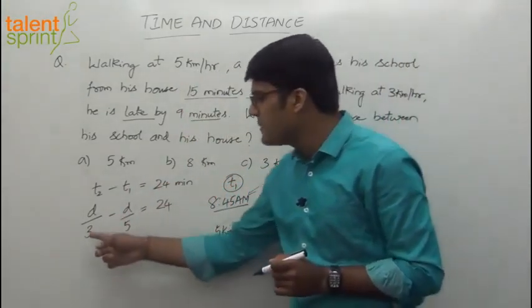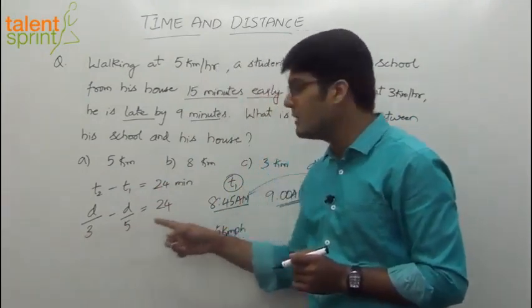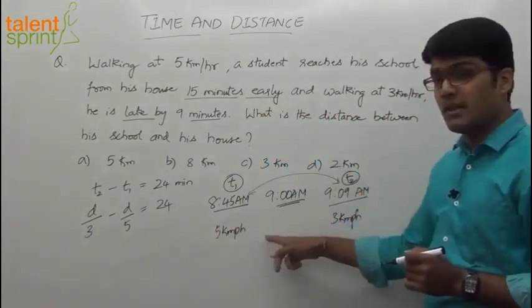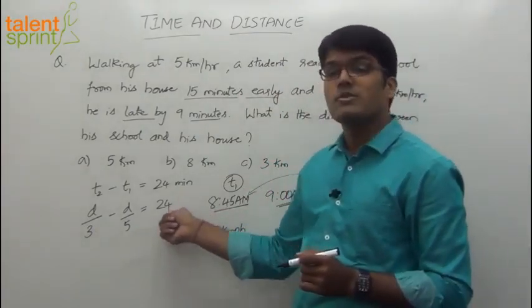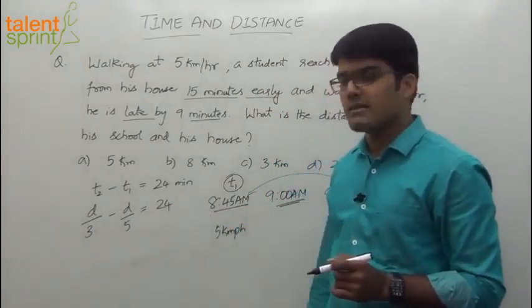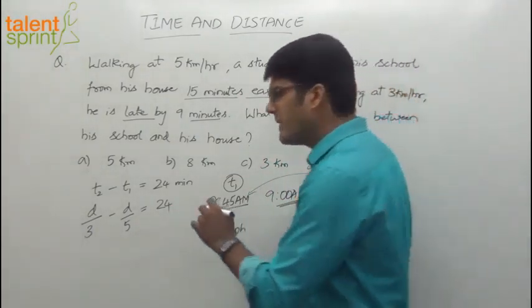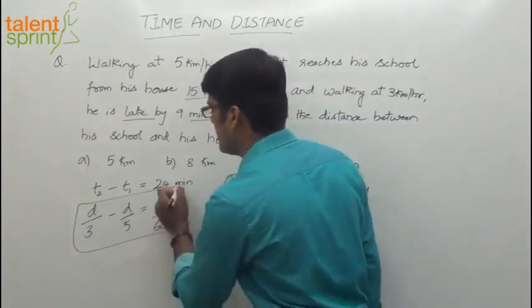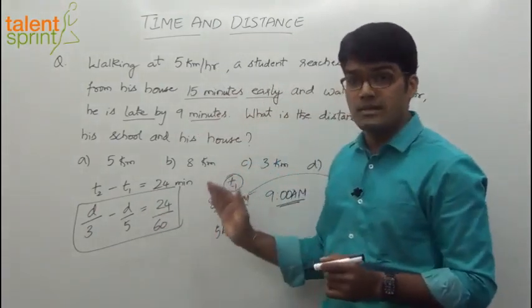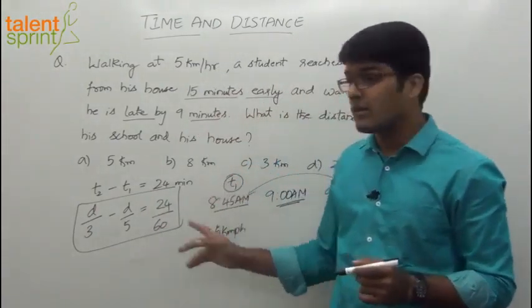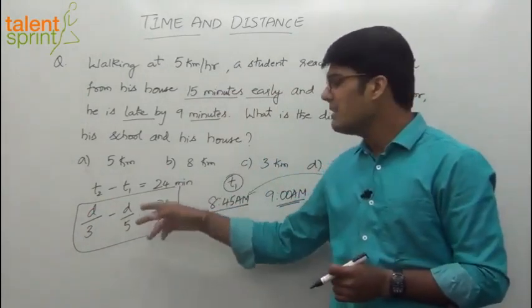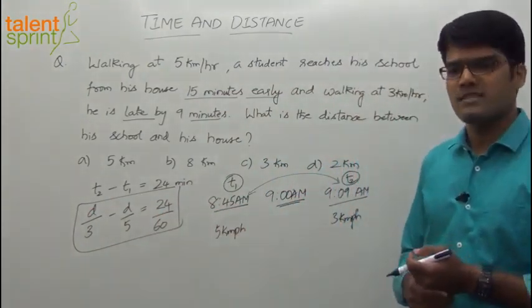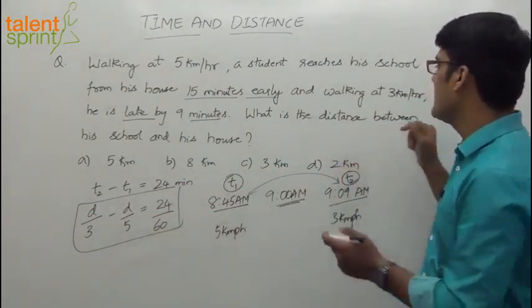The speeds are given in kmph — 3 kmph and 5 kmph — so time cannot be taken in minutes; it must be in hours. To convert 24 minutes to hours, divide by 60. So the equation becomes: D/3 minus D/5 equals 24/60. Solve this equation and you get the answer. That's the concept — D by 3 minus D by 5 equals 24 by 60.